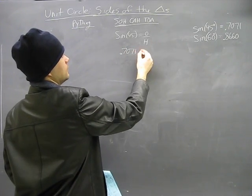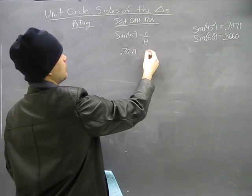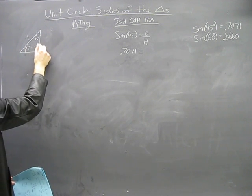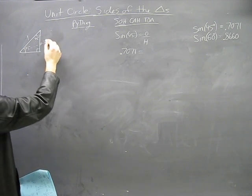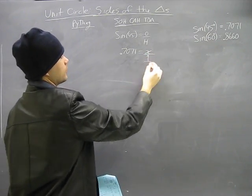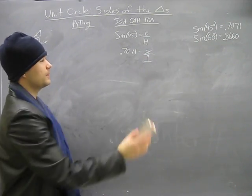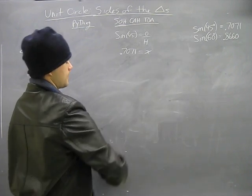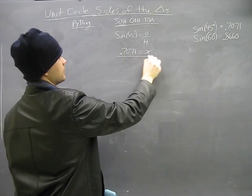0.7071 will equal, that's the sine of 45, will equal opposite. If I pick this one, opposite is unknown over hypotenuse, which is 1. Smart, lazy math people, we don't ever need to write divided by 1. We'll find out that x equals this.